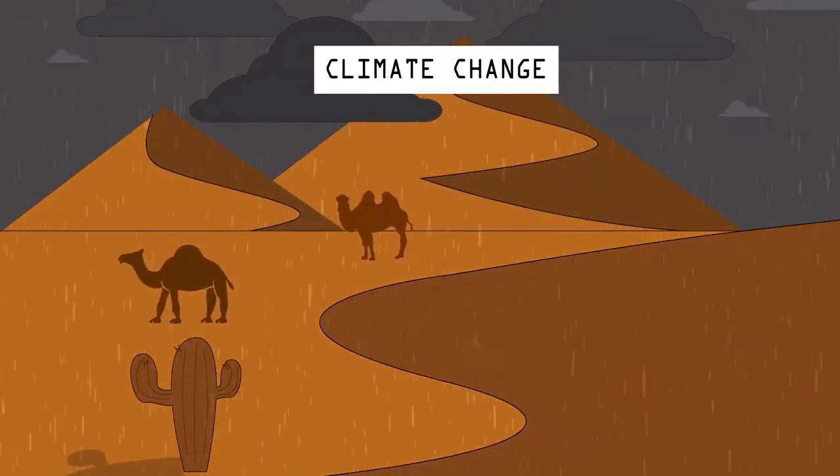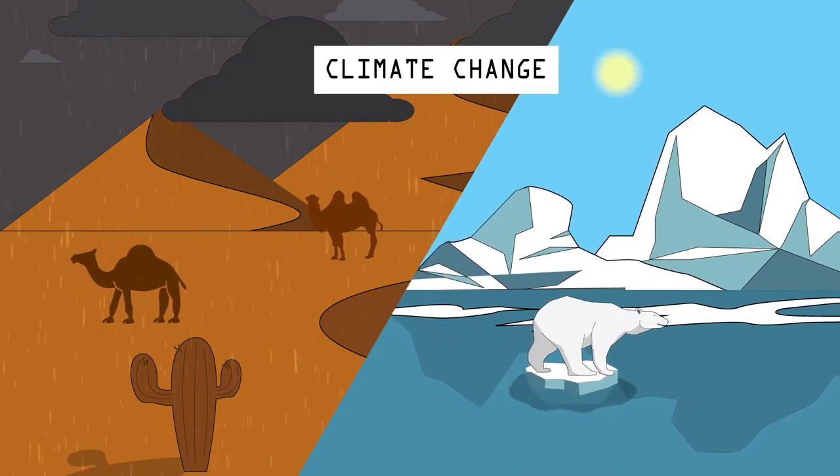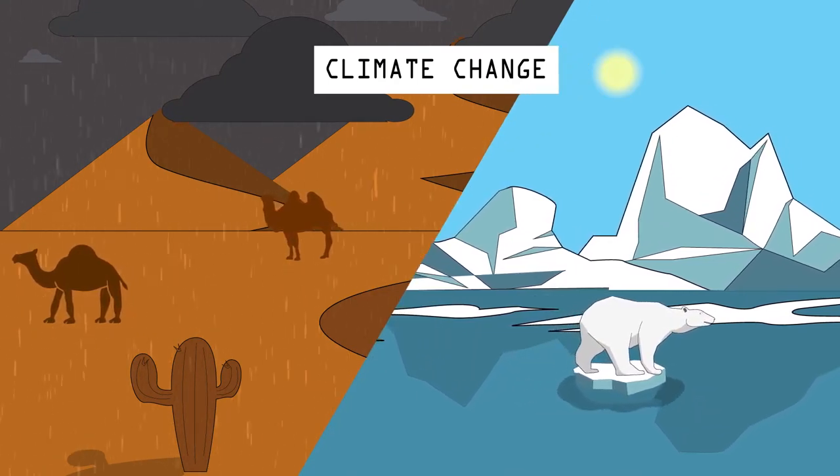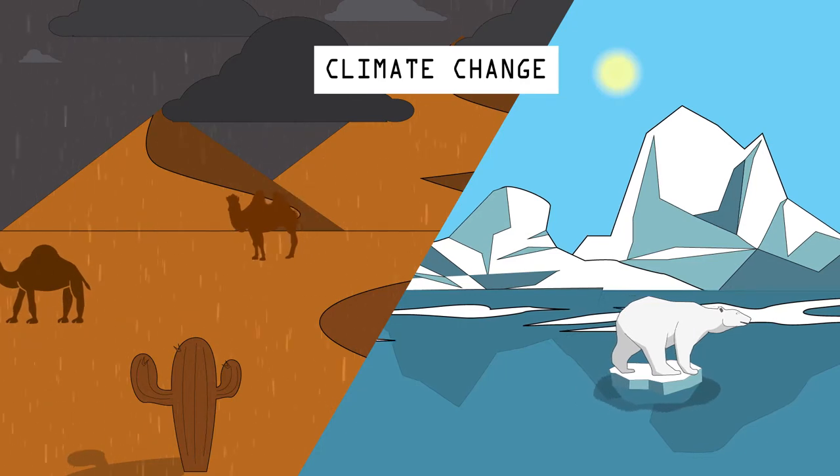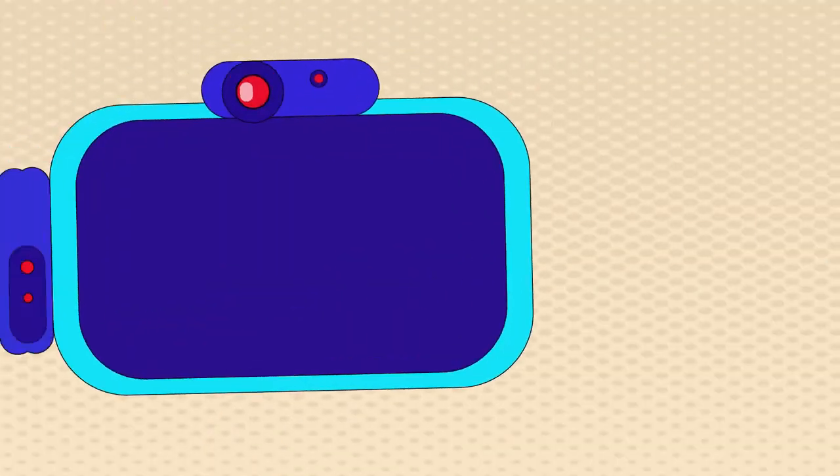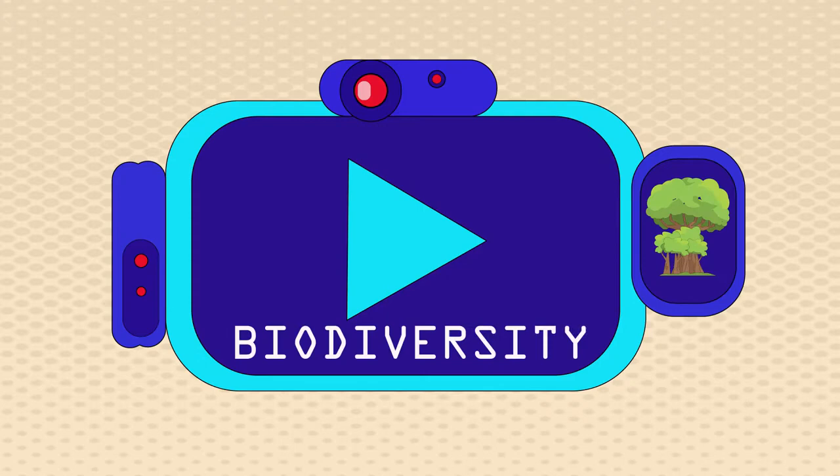Some areas of the world are getting wetter and others hotter and drier, and these changes have an impact on ecosystems and biodiversity. If you want to learn more about biodiversity and why it matters, watch this video.